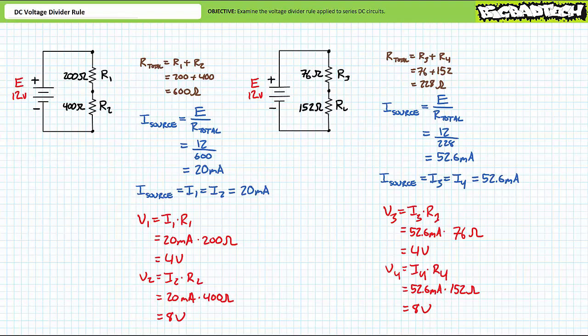You'll note that the smaller 76-ohm resistor represents one-third of the total resistance and appears to be dropping one-third of the total voltage. Similarly, the larger 152-ohm resistor represents two-thirds of the total resistance and appears to be dropping two-thirds of the total voltage. Again, it's almost as if these series resistors are dividing voltage among themselves proportional to their resistance. Both analysis scenarios necessitated solving for total resistance, then current, then voltage — if voltage is your property of interest, this method is a waste of time and too error prone.